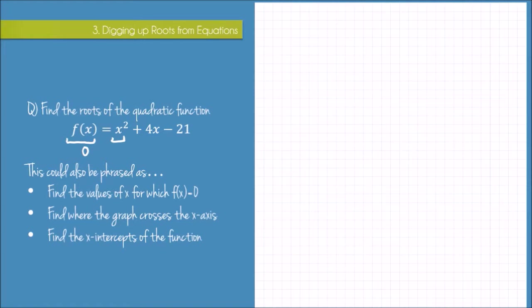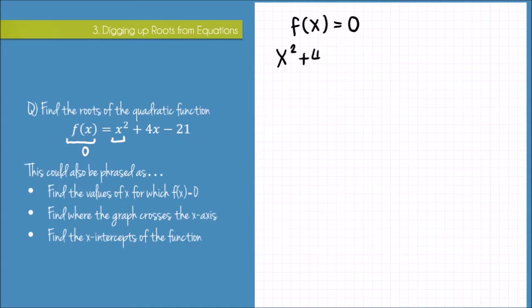We can write down that we want f(x) to be equal to 0 to find the roots. In other words, our function x² + 4x - 21 has to be equal to 0.